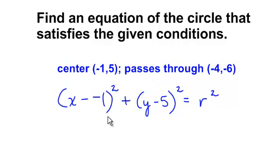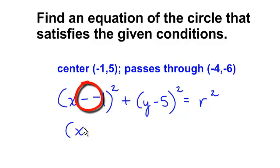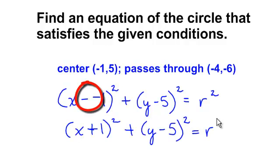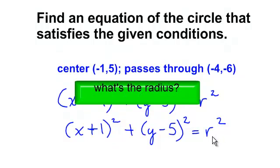Now in this first parenthesis, x minus negative 1, that will be x plus 1. We do not have the radius. I need the radius, and then I can put in the r squared, and I will have the equation of my circle.